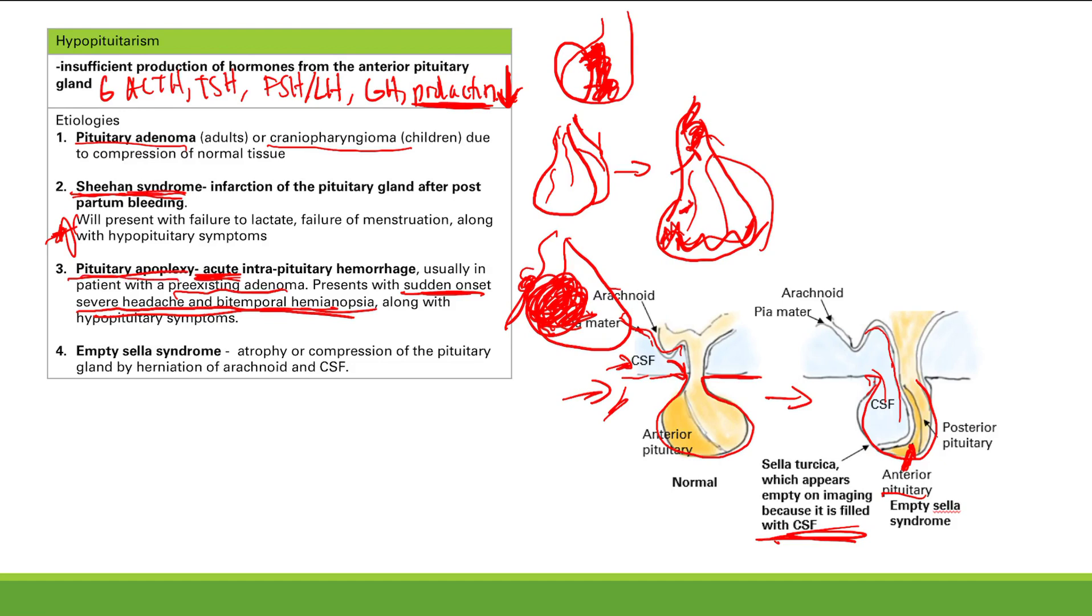Pituitary apoplexy, you get that sudden onset, severe headache, and bitemporal hemianopsia. And empty sella syndrome is when it's compression, atrophy of the pituitary gland from herniation. So clinical features,